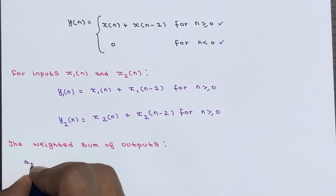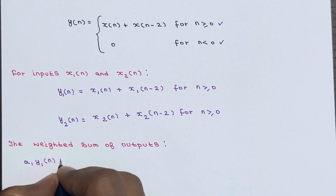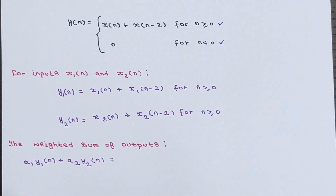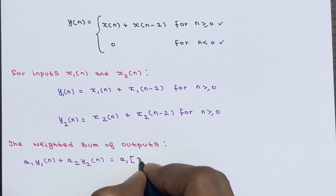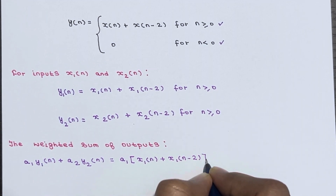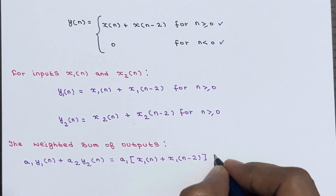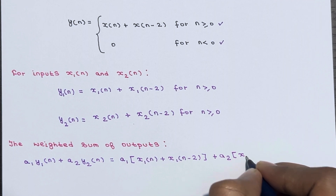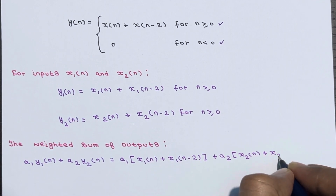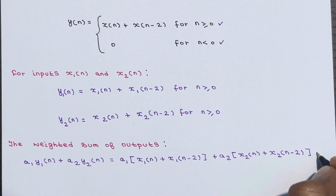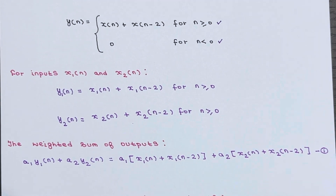Now we calculate the weighted sum of outputs: a1·y1(n) + a2·y2(n). Substituting, this becomes a1·[x1(n) + x1(n-2)] + a2·[x2(n) + x2(n-2)]. This is the weighted sum of outputs — let's call this Equation 1.